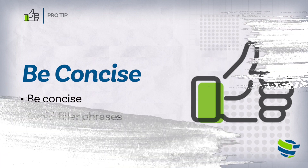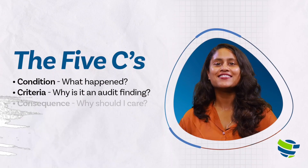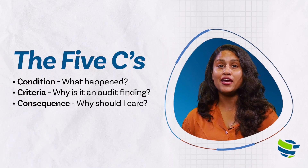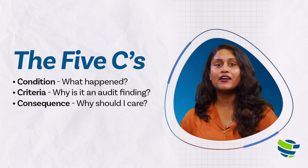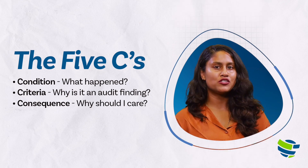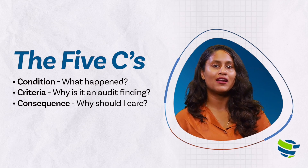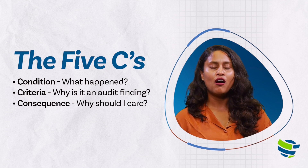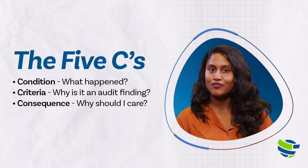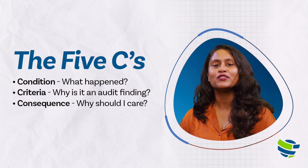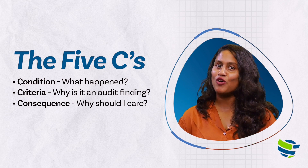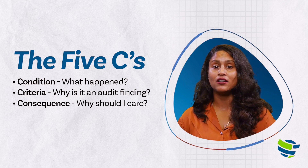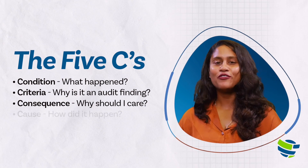The third C is consequence — you must describe why your audience should care. In our example, maybe that system change issue will now be documented on a System and Organization Controls report, also called a SOC report, going out to customers. That could potentially cause some reputational damage, which can lead to reduced sales.